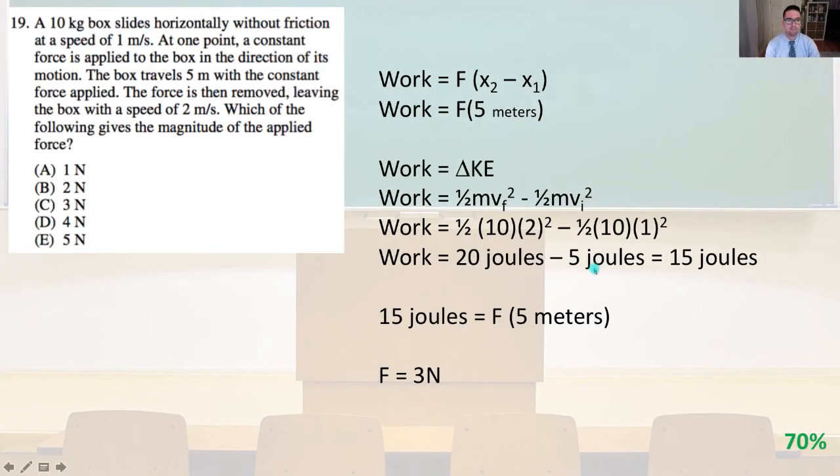Number 19. A 10-kilogram box slides horizontally without friction at a speed of 1 meter per second. At one point, a constant force is applied to the box in the direction of its motion. The box travels 5 meters with the constant force applied. The force is then removed, leaving the box with a speed of 2 meters per second. Which of the following gives the magnitude of the applied force? We know that work equals the force times x2 minus x1, that's force times distance, so work equals the force times 5 meters.